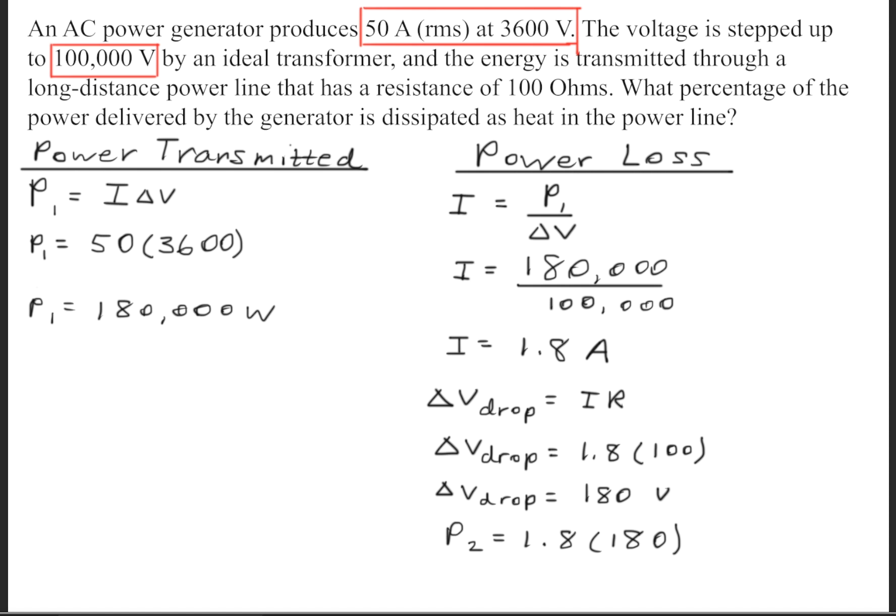Next, we'll calculate the power loss, and we'll get that by once again using P equals I times delta V. So we'll take 1.8 amps and multiply it by 180 volts. This will give us a power loss of 324 watts.